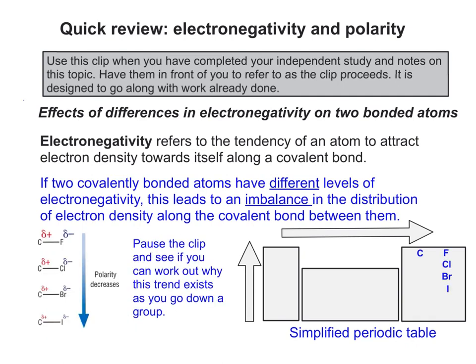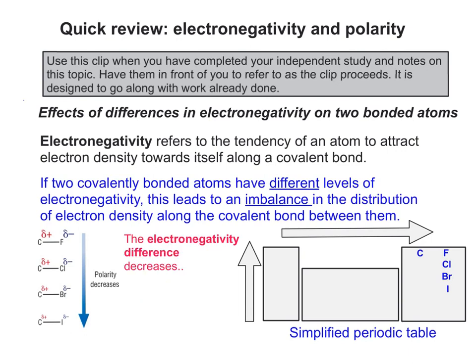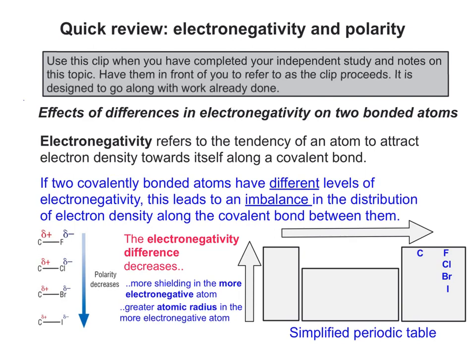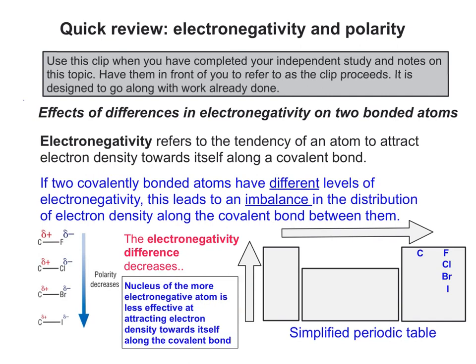Polarity decreases if you go down a group — pause the clip and see if you can work out why. Obviously it's because the electronegativity difference decreases. In no particular order: there is more shielding in the more electronegative atom — in this case the halogen — and a greater atomic radius in the more electronegative atom, which makes the nucleus less effective at attracting electron density.